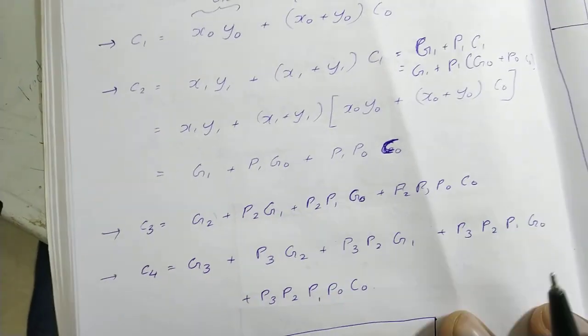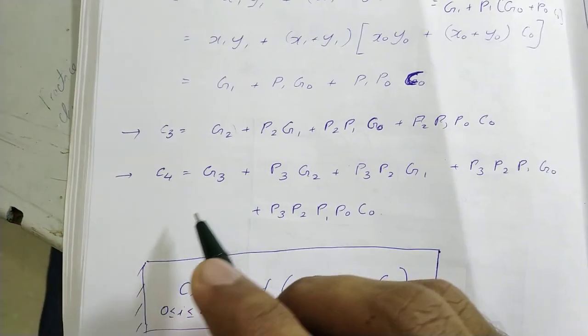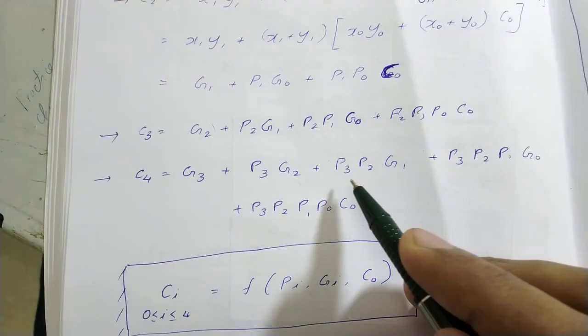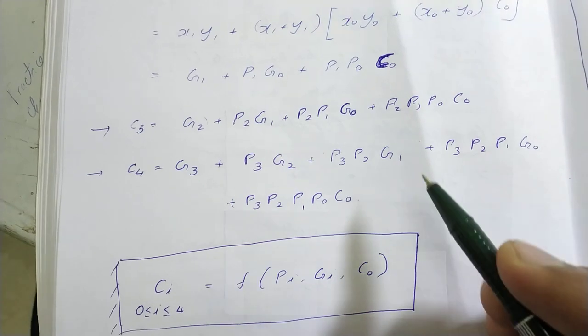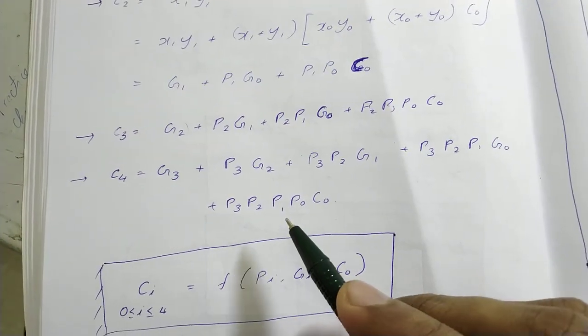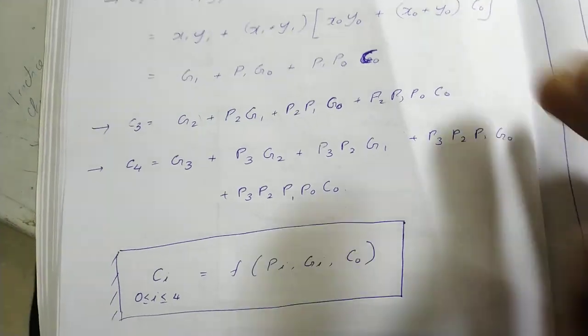It is like a series. The same thing we can do for c4. That is g3 plus p3 g2 plus p3 p2 g1 plus p3 p2 p1 g0 plus p3 p2 p1 p0 c0. It is just like a series.